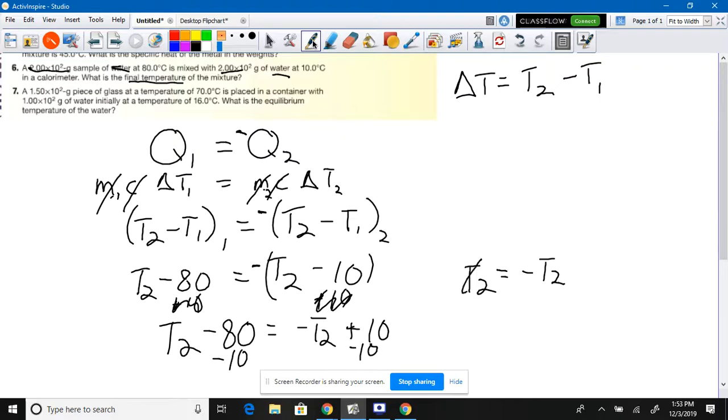Sorry, T2 plus 80 plus 90. My bad. T2 plus 90 equals negative T2. OK, so what's our final temperature going to be, guys? Minus 90. T2 minus 90 equals negative T2. All right.